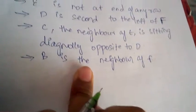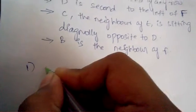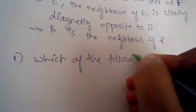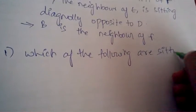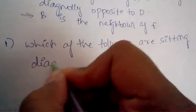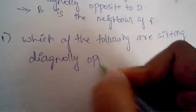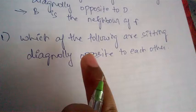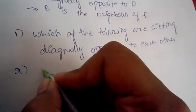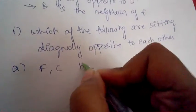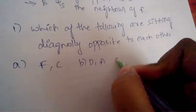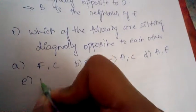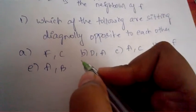These four are the given conditions. The first question is: which of the following are sitting diagonally opposite to each other? The options are: (1) F and C, (2) D and A, (3) A and C, (4) A and F, (5) A and B.